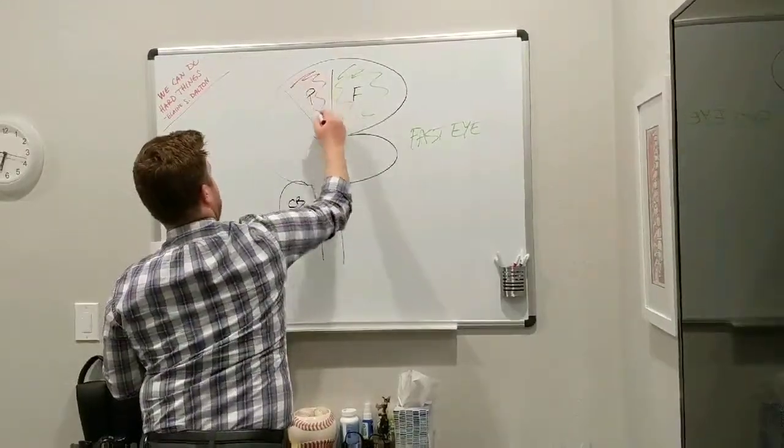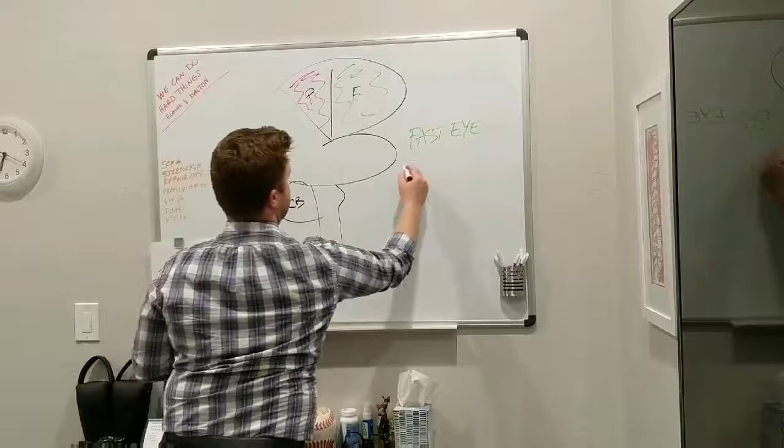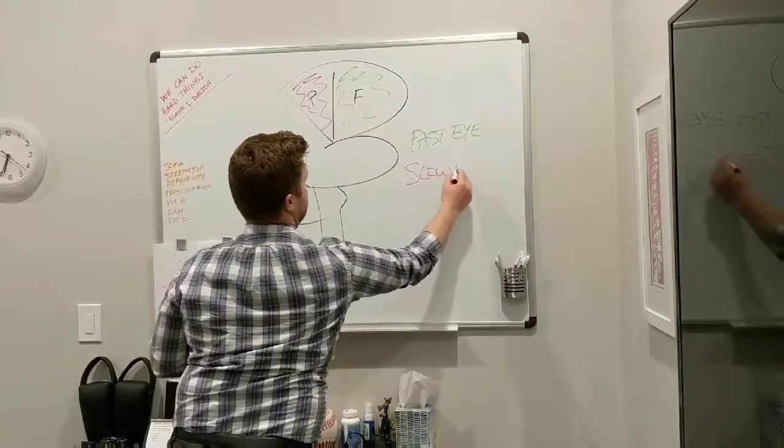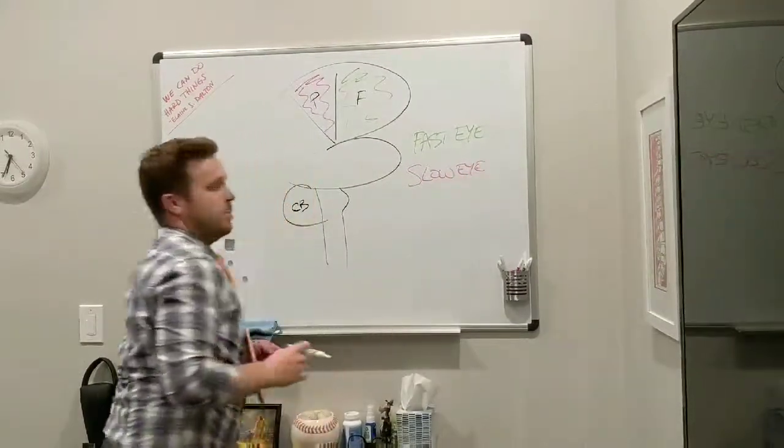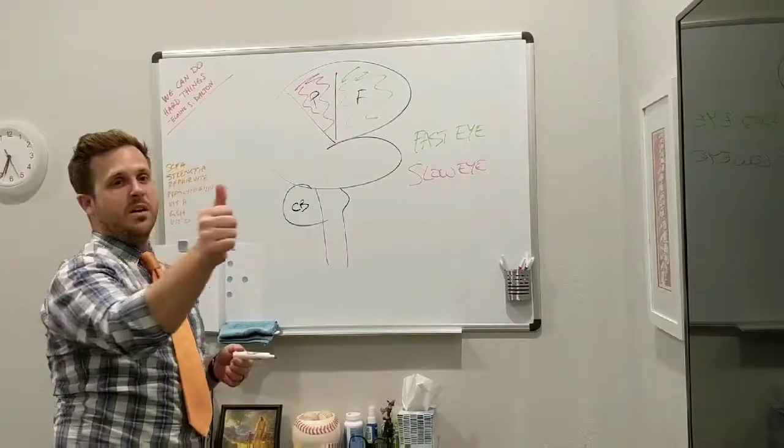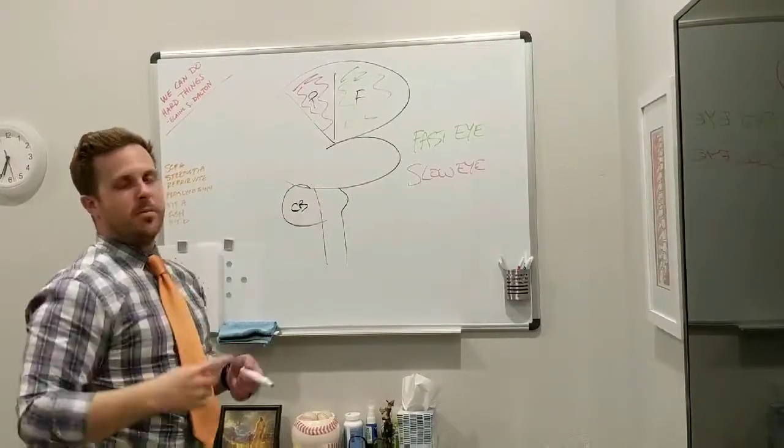Now, we're going to focus on the parietal lobe, and that one is slow eye movements. That one is your ability to follow a target from here all the way across to the other side and back and vice versa.